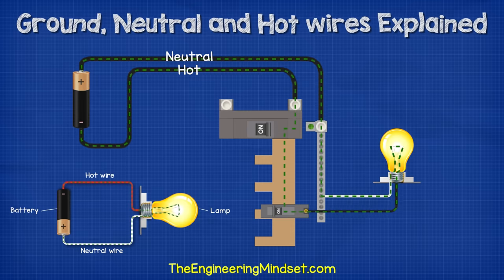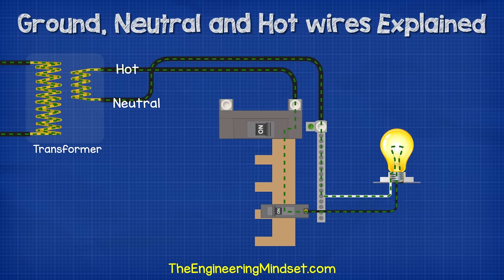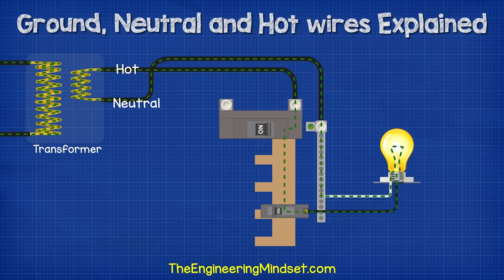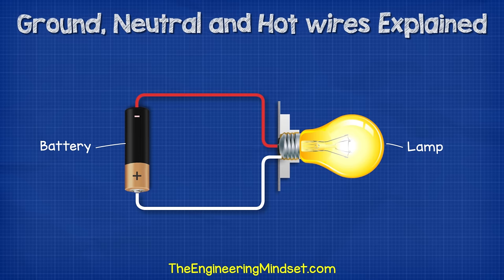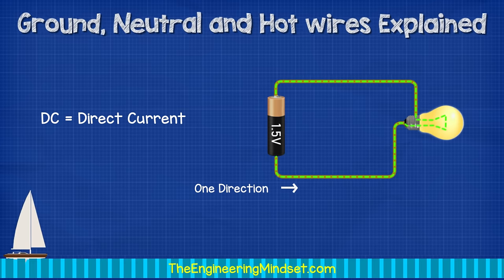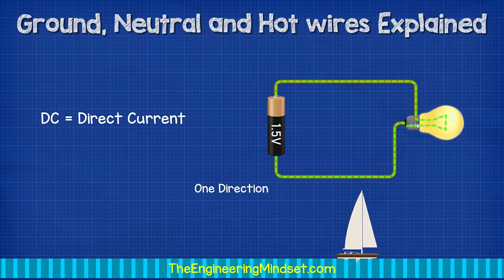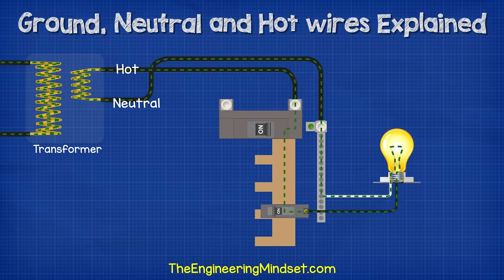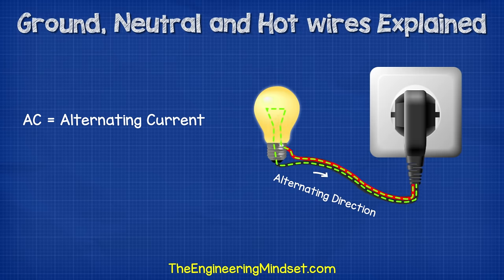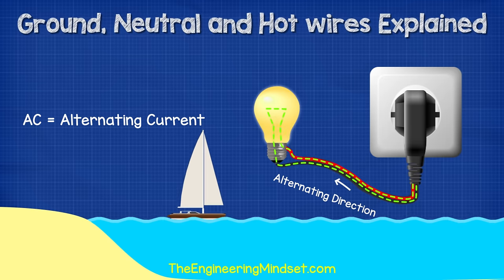Of course homes are not connected to batteries — they are connected to transformers. So we replace the battery with a transformer and we have a complete circuit. The electricity in this circuit is AC alternating current, which is different from the DC direct current we saw with the battery. With DC the electrons flow directly from A to B in only one direction, much like the flow of water down a river. But in our homes we have AC alternating current, which means the electrons alternate their direction between forwards and backwards, much like the tide of the sea.